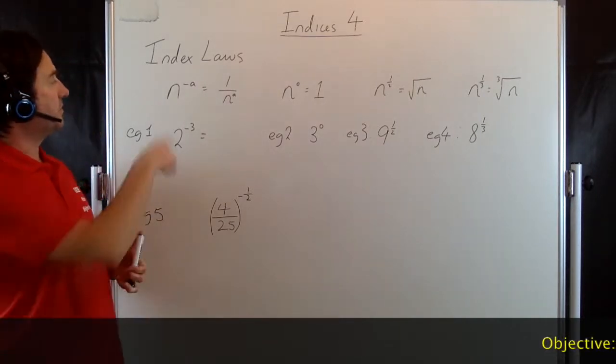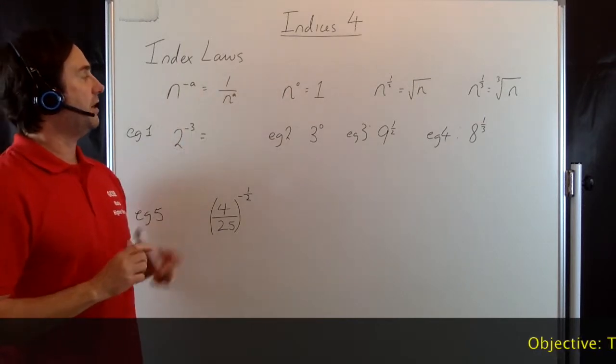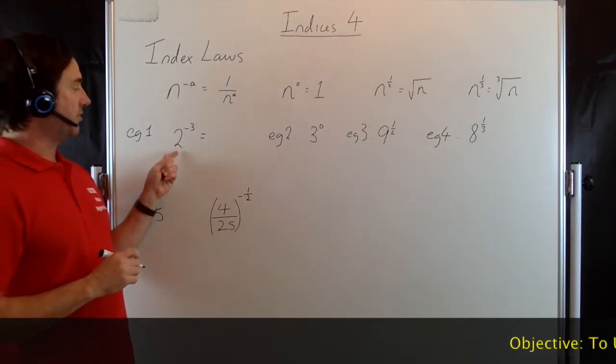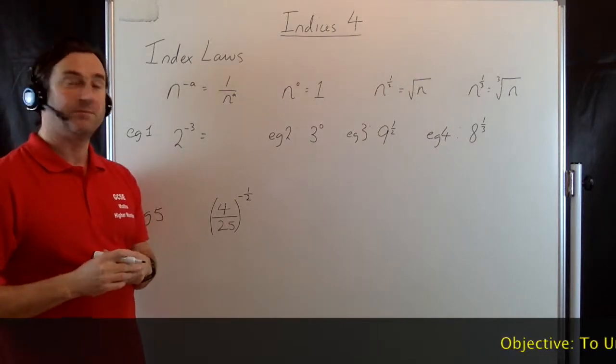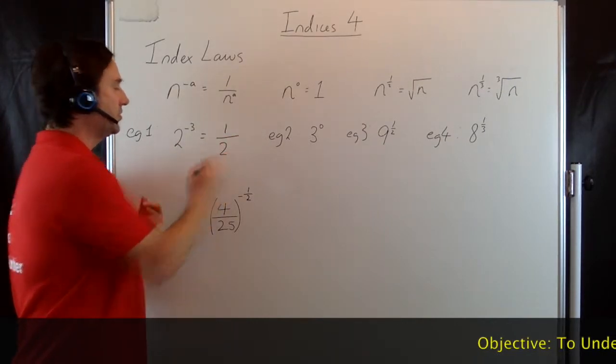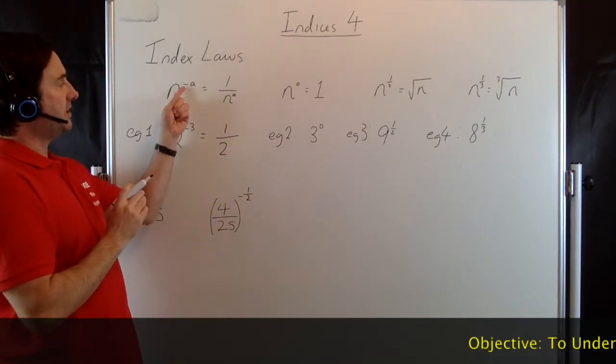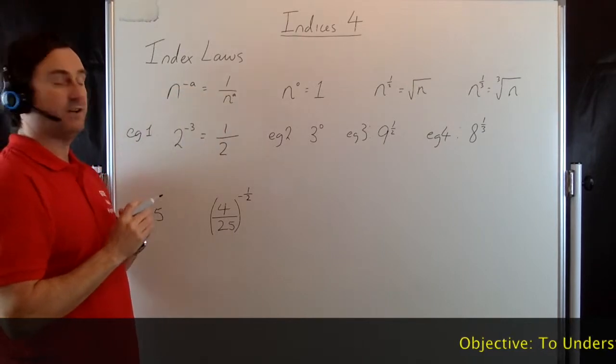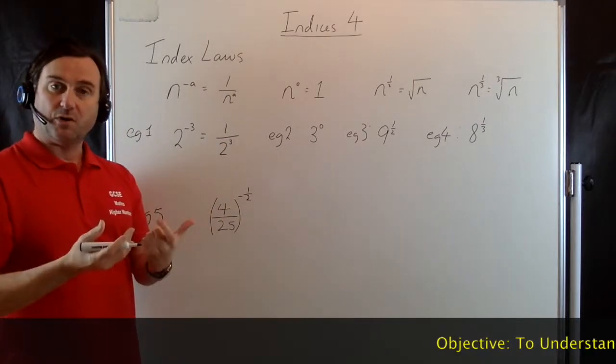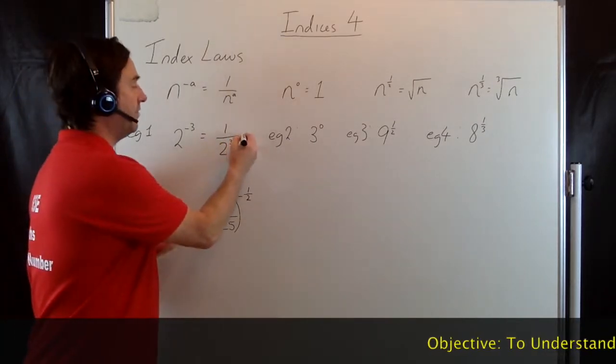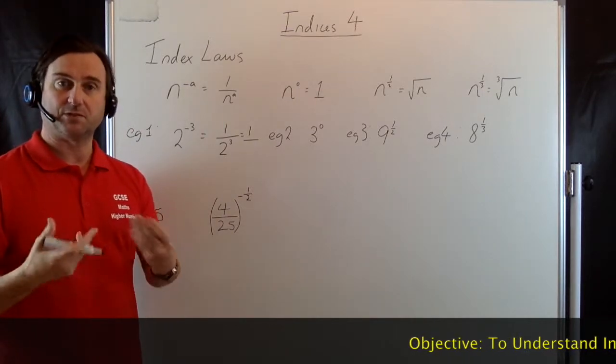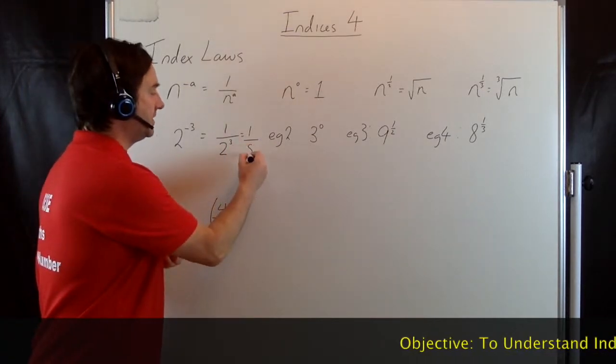So have a look at the first one. n to the negative a is equal to 1 over n to the a. So with this example here we've got 2 to the negative 3. That's going to give us 1 over 2. But if you notice here, the negative a goes to a positive a on the bottom, so that would be 2 to the power of 3. Then working that out, we're going to have 1 over 2 to the 3, which is the same as 2 times 2 times 2, which is 8.